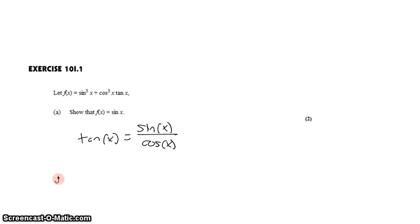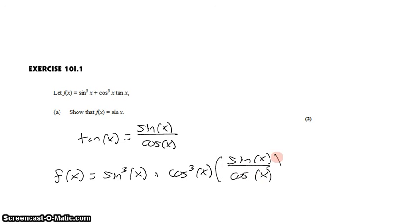Here's how it works. This means that f of x is equal to sine cubed of x plus cosine cubed of x times tangent of x. I'm going to write tangent of x as sine of x over cosine of x.